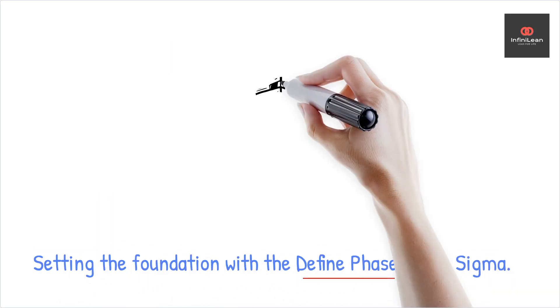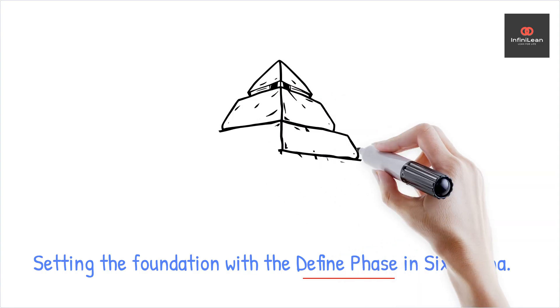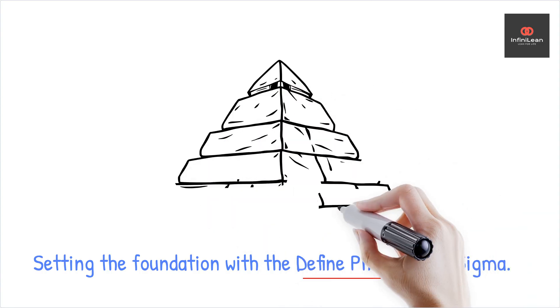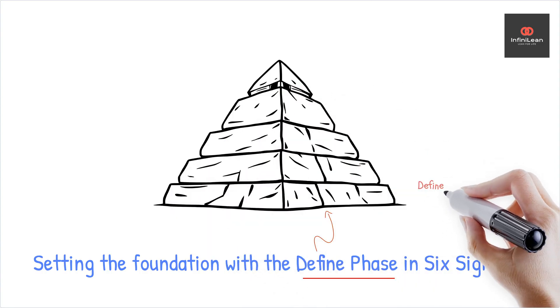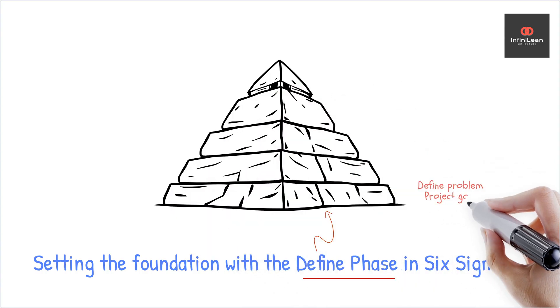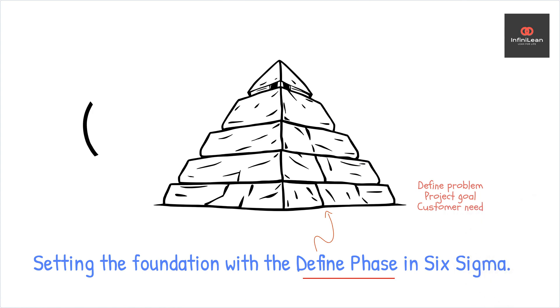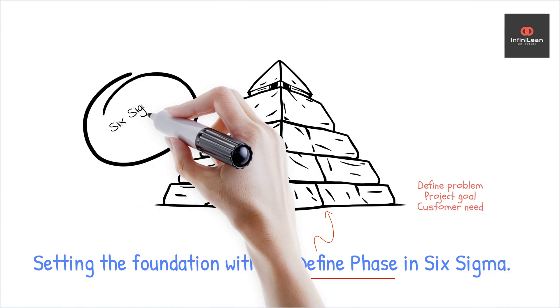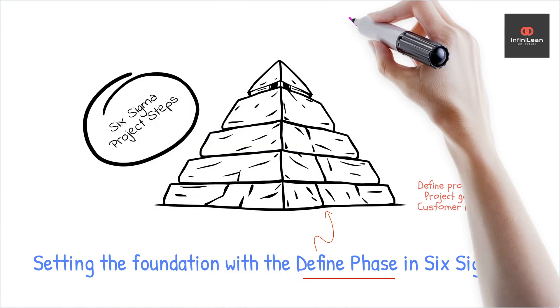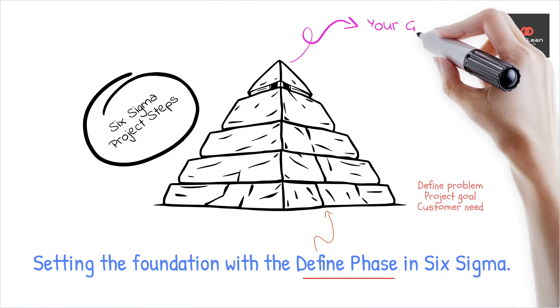The Define Phase sets the foundation for your Six Sigma project. It involves clearly defining the problem, project goals, and customer requirements. With a solid start, improvements will be practical, so this phase is vital.